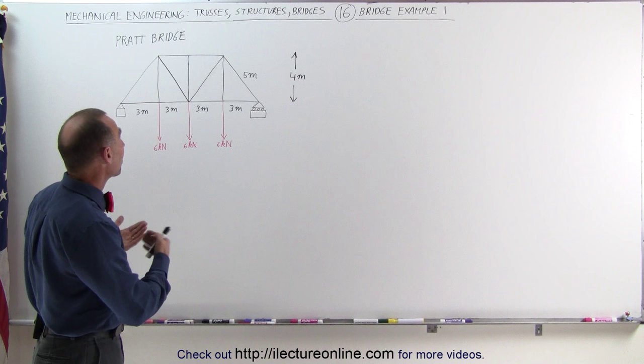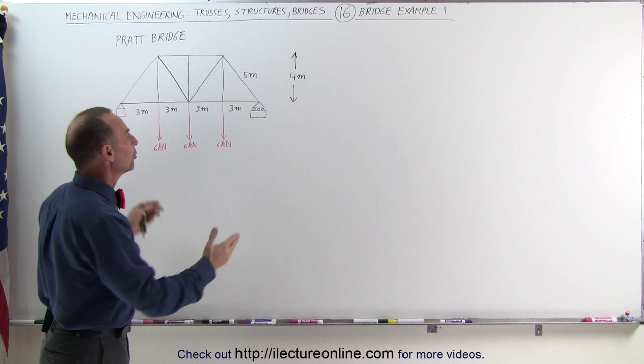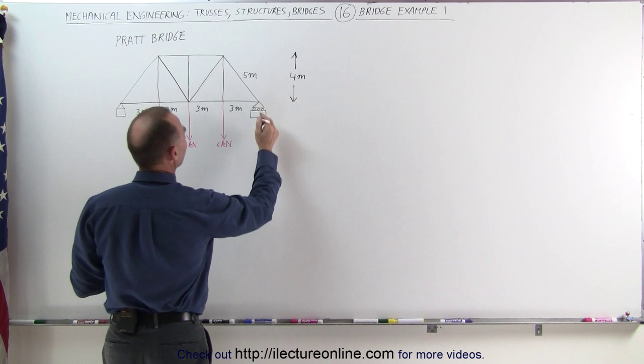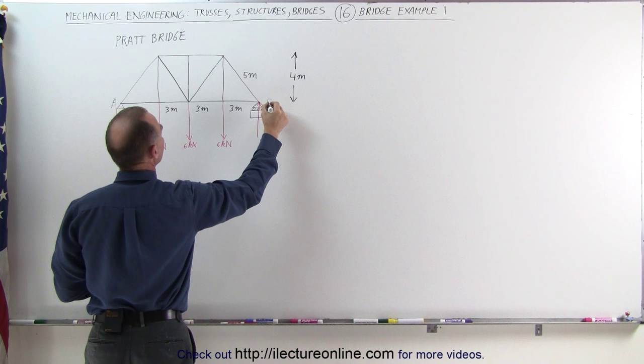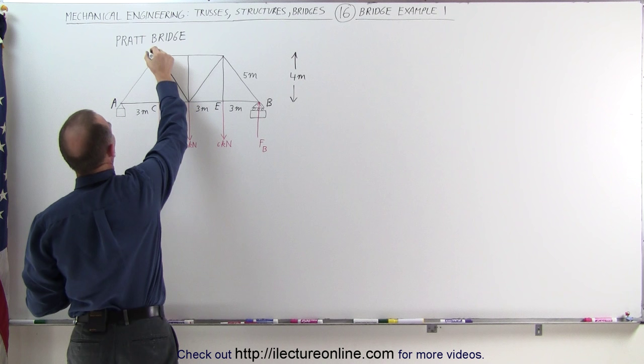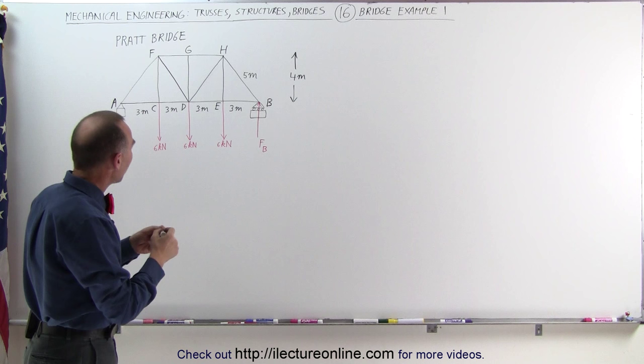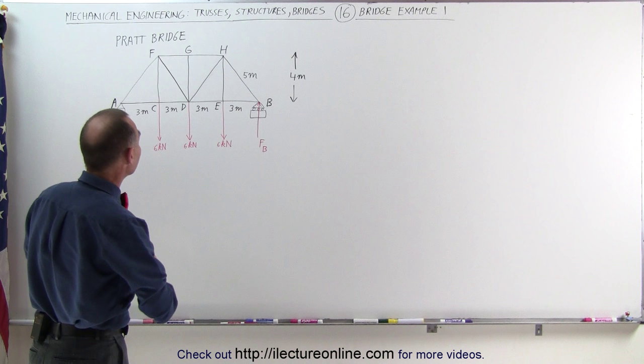The first thing we should do is determine what the forces are on the endpoints, on the support points. To do that, we can imagine there's going to be a force pushing back — let's call that force at B. We have to label the members: let's call this A, B, C, D, E, F, G, and H. It doesn't matter how you label them as long as each joint has a letter associated with it, so we know how to define the tension and compression and the magnitude of the forces.